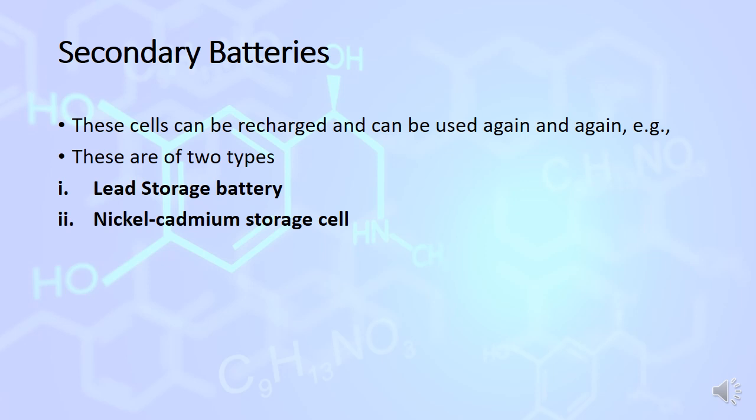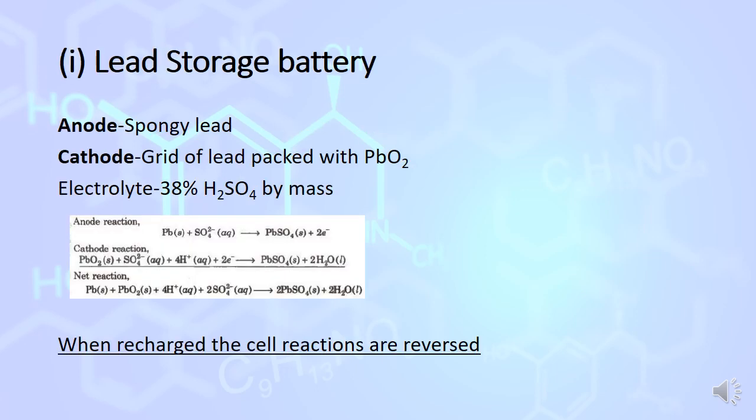Secondary batteries can be reused again and again and can be recharged. There are two examples: lead storage battery and nickel cadmium storage cell. In lead storage battery, anode is made up of spongy lead, cathode is made up of grid of lead packed with red brown lead dioxide. Electrolyte uses sulfuric acid 38% by mass having density 1.3 gram per ml.